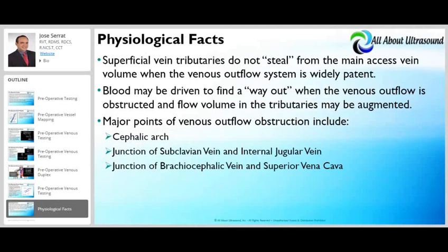It is important to remember that superficial vein tributaries do not steal blood from the main axis as long as venous outflow is widely patent. Blood may be driven to find an alternate route when venous outflow is obstructed. Major points of venous outflow obstruction include the cephalic arch, the junction of the subclavian vein with the jugular vein, and the brachiocephalic vein with the superior vena cava.